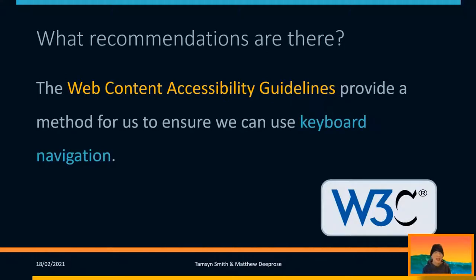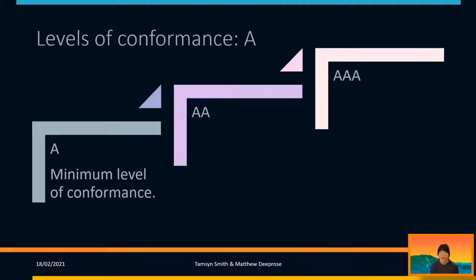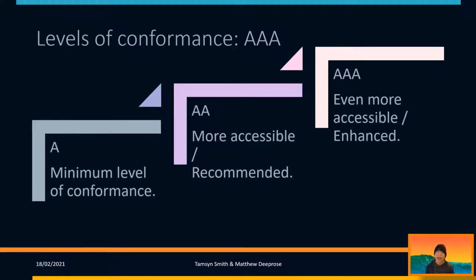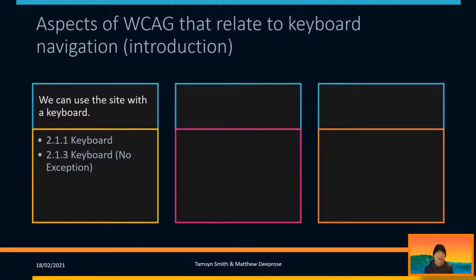What recommendations do we need to follow to make sure our services are available to use with the keyboard? We're going to start talking about the Web Content Accessibility Guidelines, which you might hear us calling WCAG. They have a large number of guidelines, including on keyboard navigation. They're broken down into three levels of conformance: A, AA, and AAA. A is the minimum up to AAA, which is the enhanced level. We should be aiming at AA at a minimum, and ideally aiming at AAA when we can. I'm going to cover a few, broken down into different sections.